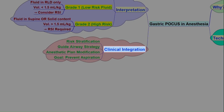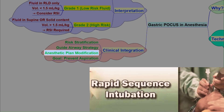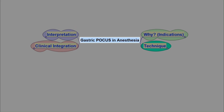Finally, let's talk about clinical integration. This isn't just an academic exercise — we use this tool for risk stratification, to quantify why a patient is at aspiration risk, and to guide airway strategy. The grade determines if standard induction is safe or if rapid sequence is needed. We can also modify the anesthetic plan by adjusting timing, technique, or preparing for a difficult airway. The ultimate goal is to prevent pulmonary aspiration and keep patients safe.